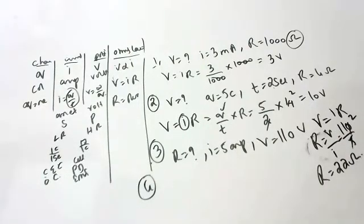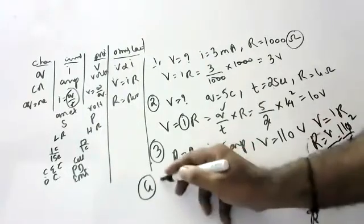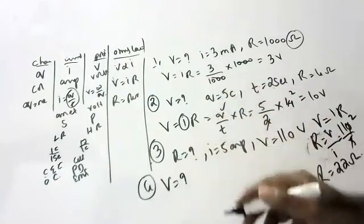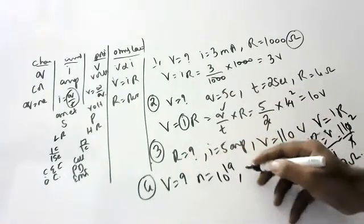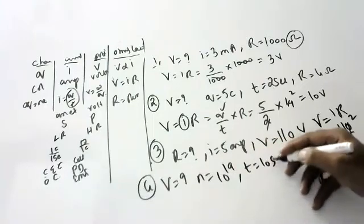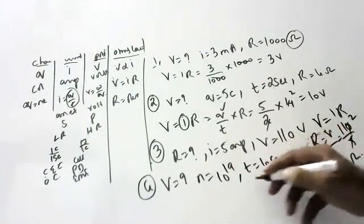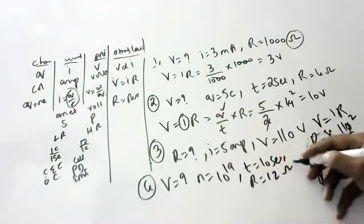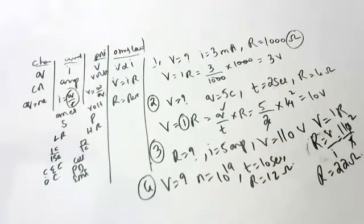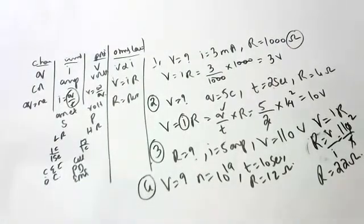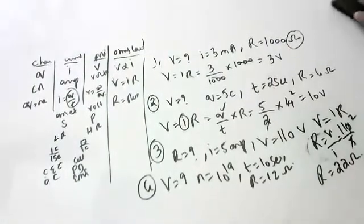Numerical 4: Find the potential when 10¹⁹ electrons flow for 10 seconds across a resistance of 12 ohms. Using Q = Ne and V = (Q/T) × R: V = (10¹⁹ × 1.6×10⁻¹⁹) / 10 × 12 = 1.92 volts.